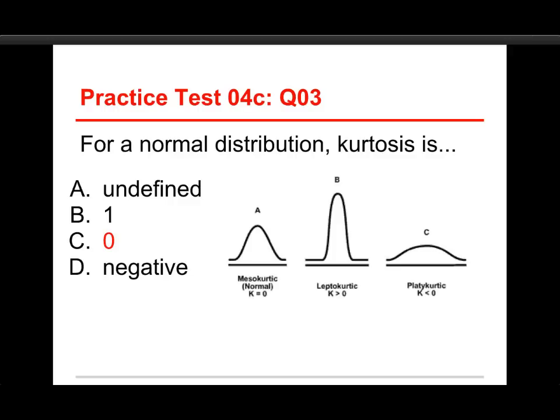Here we've got a little chart here that shows our three variations: the mesocurtic, that's the normal distribution, and its value for kurtosis is zero because it serves as the defining point, and so you see it says K for kurtosis is equal to zero. The leptocurtic right next to it, which is the tall, narrow, pointy one,